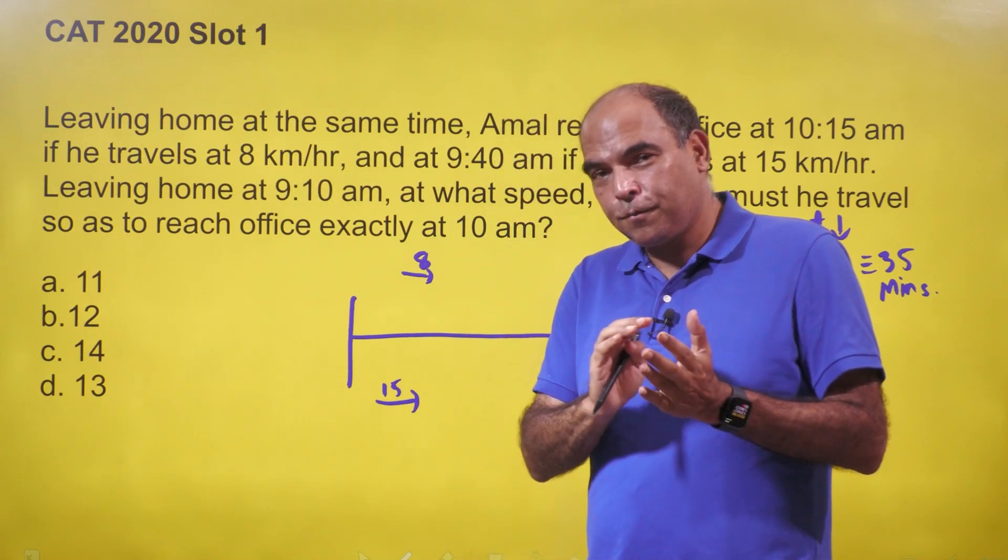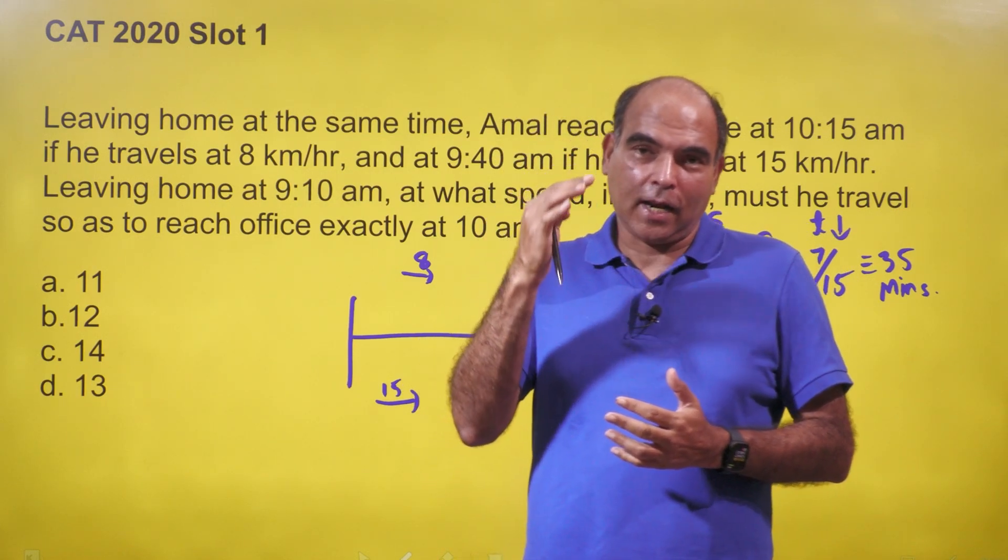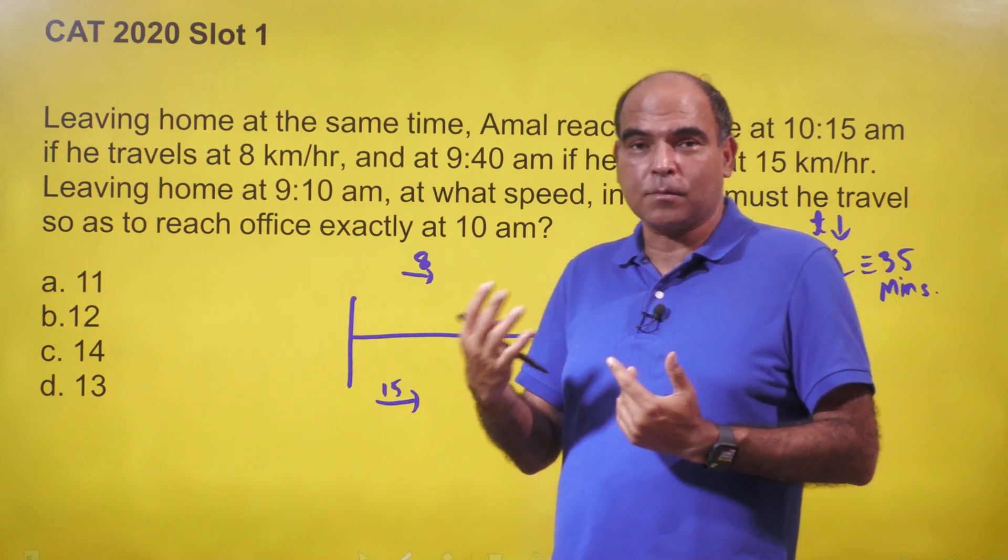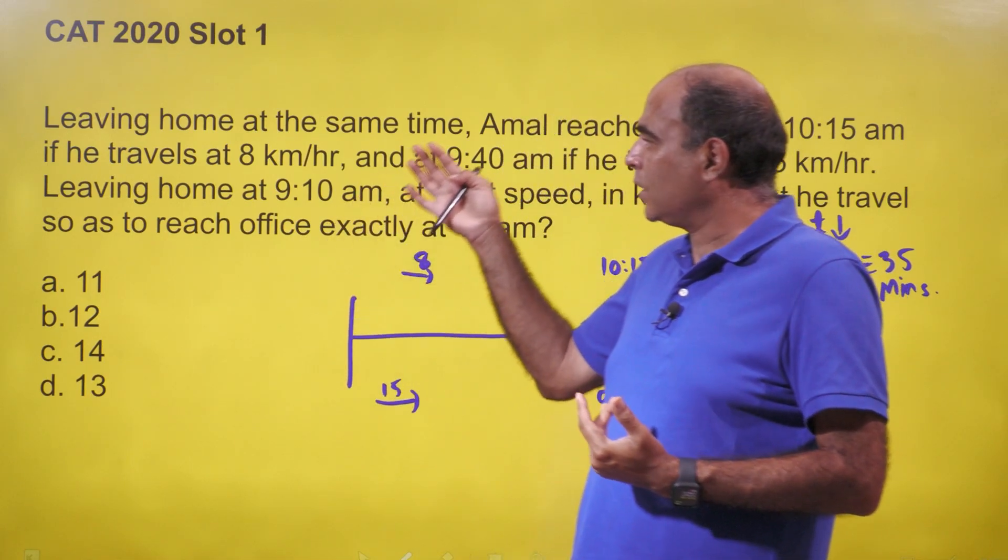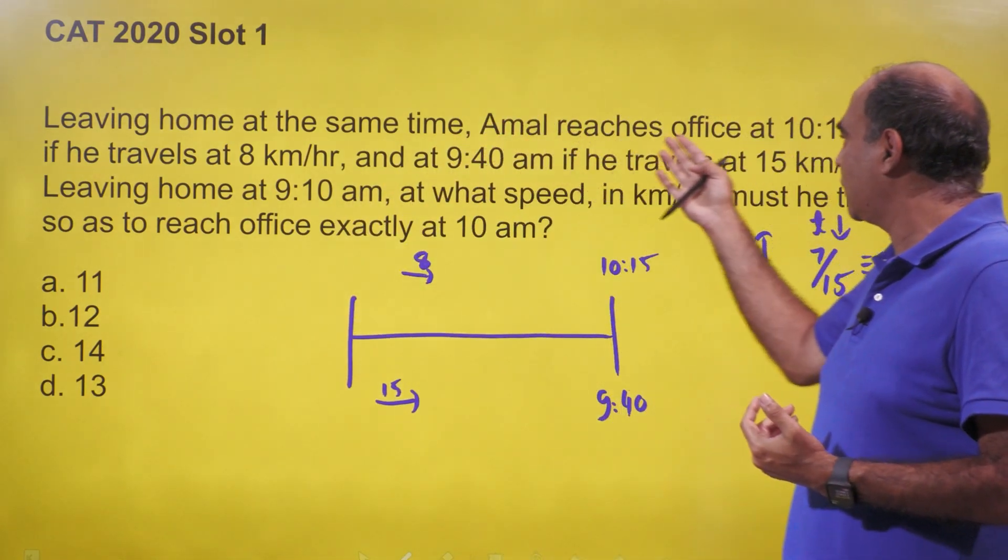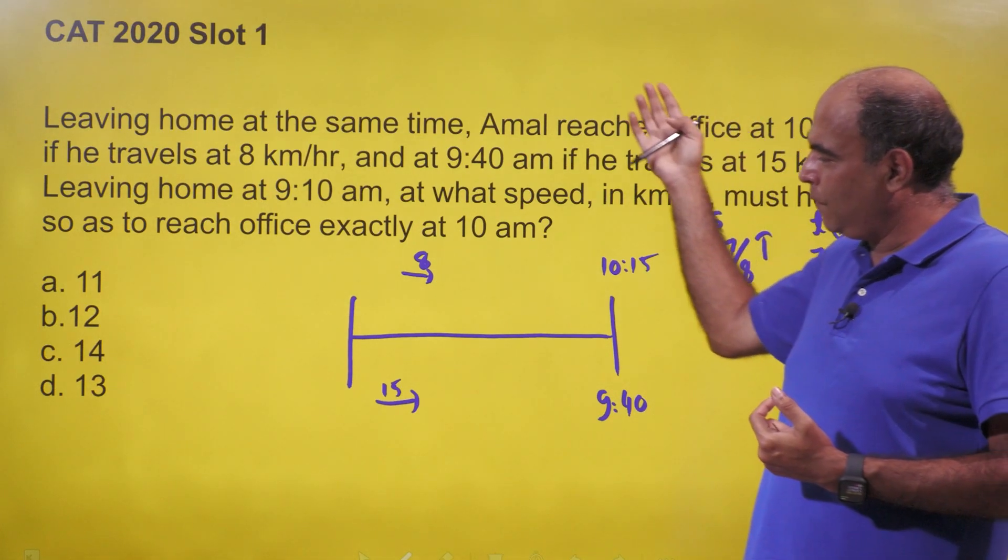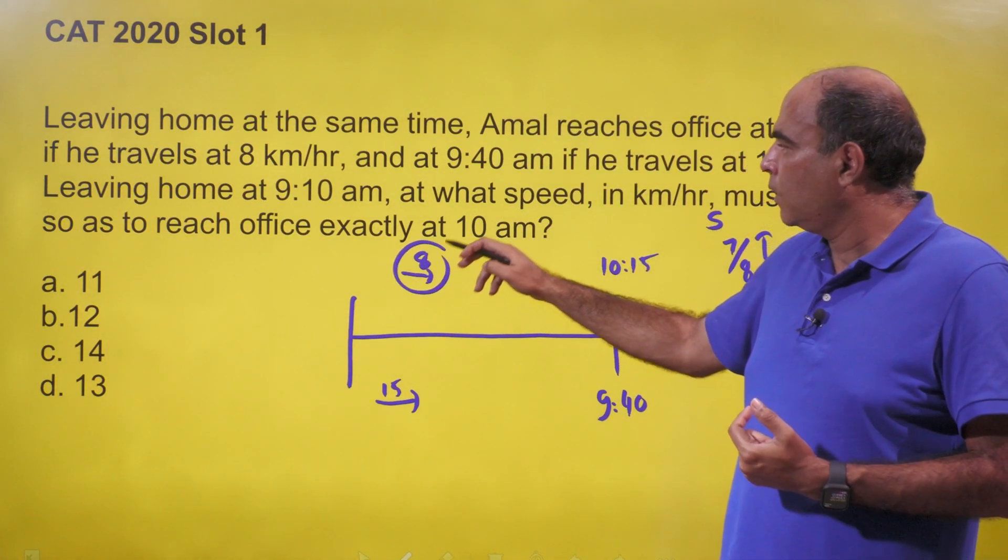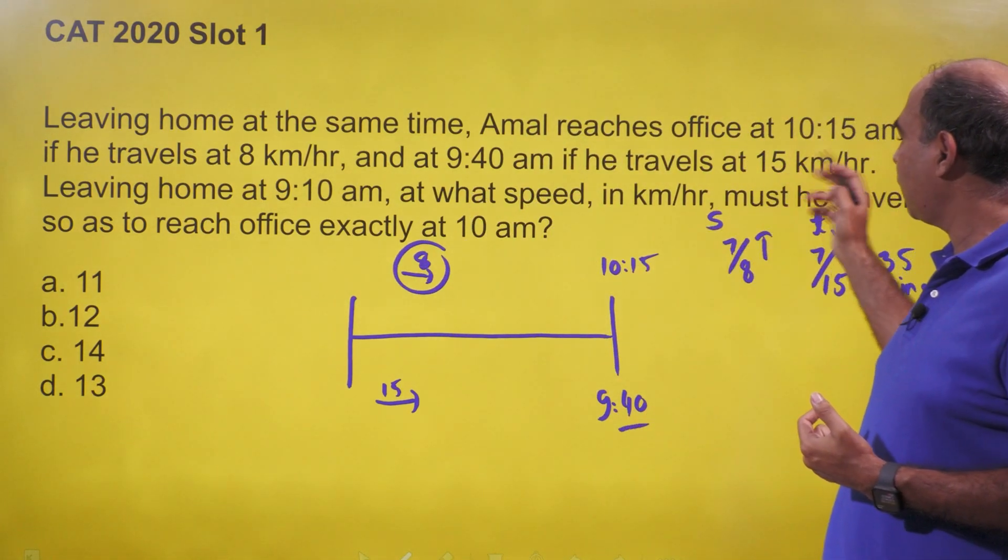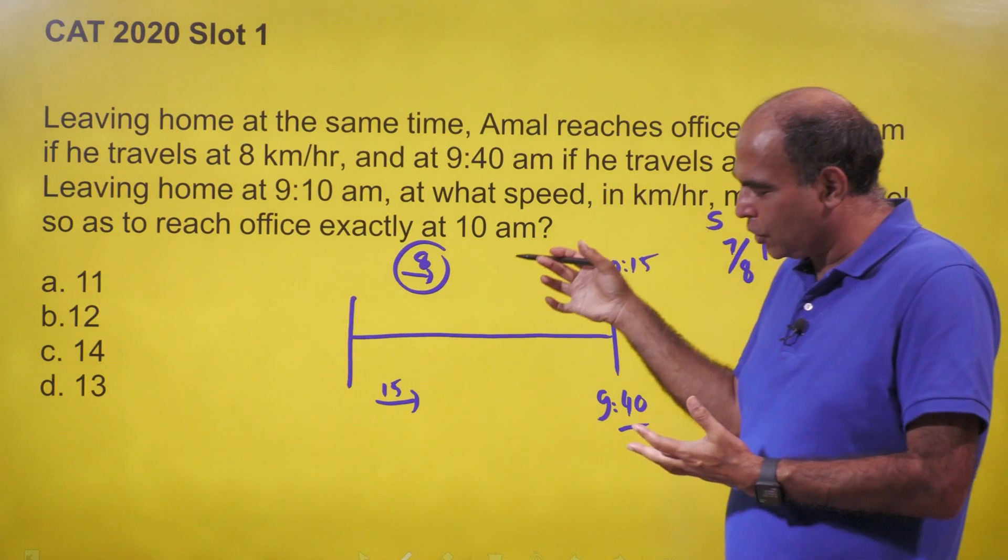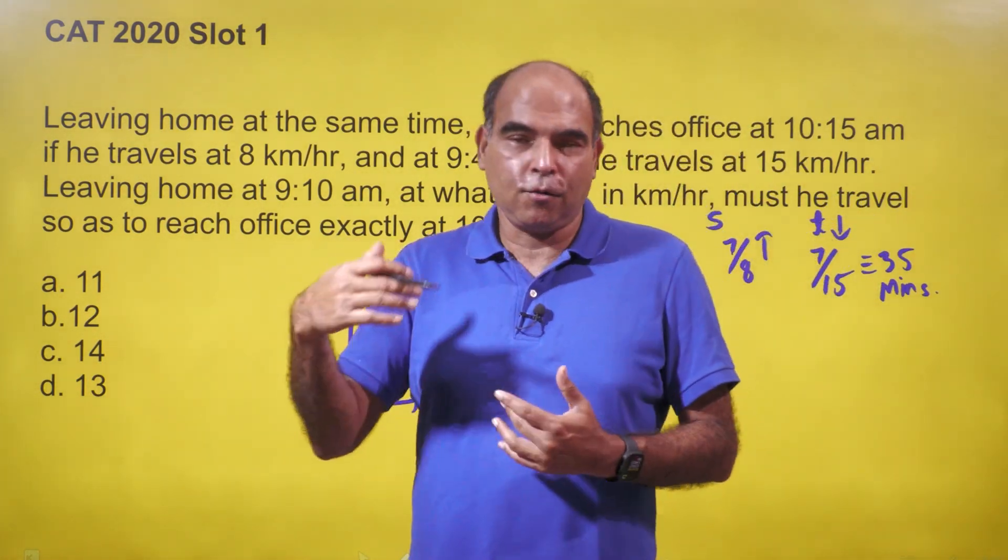Hey guys, a pretty complicated question if you look at it normally, but if you have the reactions required, this becomes a 60-second solution. The question says: leaving home at the same time, Amal reaches office at 10:15 AM if he travels at 8 km/hr, and at 9:40 AM if he travels at 15 km/hr. There's an interaction or structure here which you have to use as the trigger.